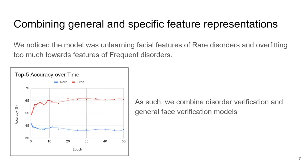When analyzing the top-five accuracy on GMDB Frequent and GMDB Rare, we see that the model is fitting too much towards the training data and losing general facial features in the process. As such, we decided to combine the general face verification model, which performs well on unseen disorders, with our disorder verification models, which perform well on seen disorders.